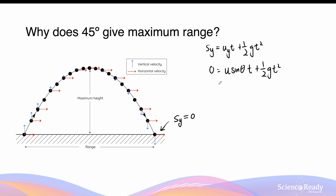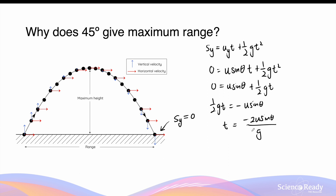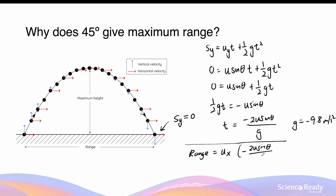If we divide both sides by t, we get 0 = u·sinθ + ½g·t, so ½g·t = −u·sinθ, and therefore t = −2u·sinθ / g. Keep in mind that here g equals −9.8 m/s². The range of this object is given by its initial horizontal velocity, ux, multiplied by the time of flight, which is now −2u·sinθ / g.